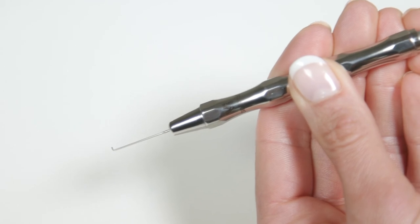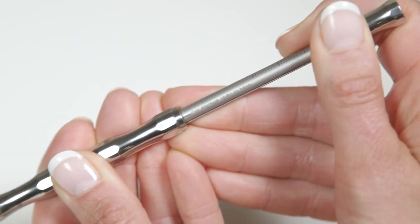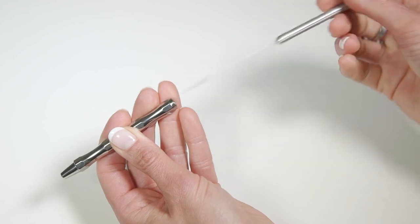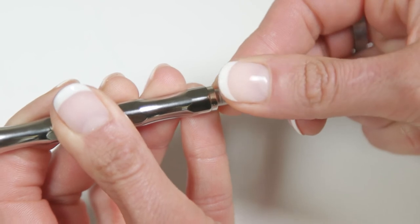The depth gauge is a delicate instrument and should be handled with care. It should always be stored with the probe fully retracted to avoid damage. It should also be taken apart for cleaning after every use and then reassembled prior to storage.